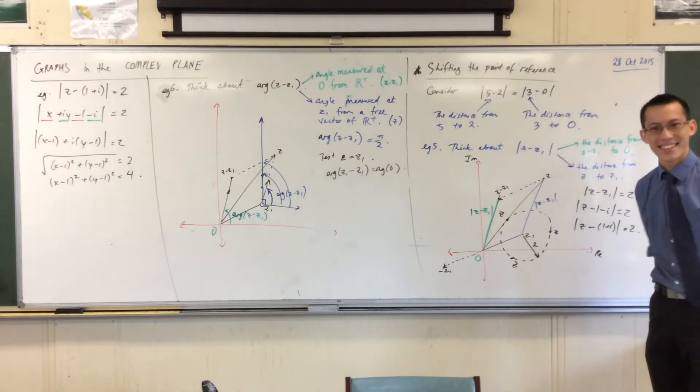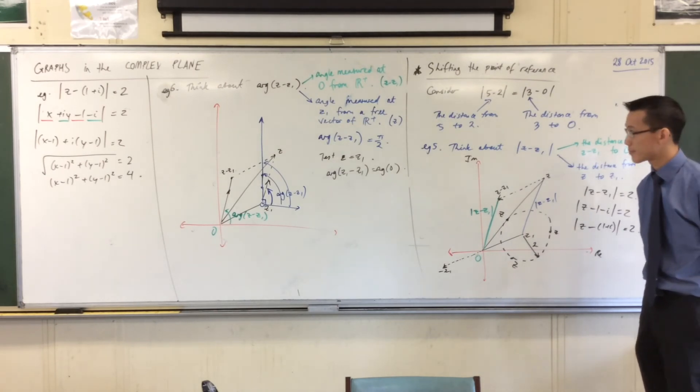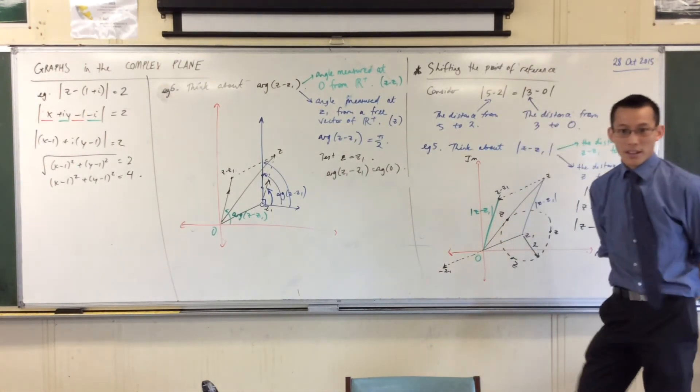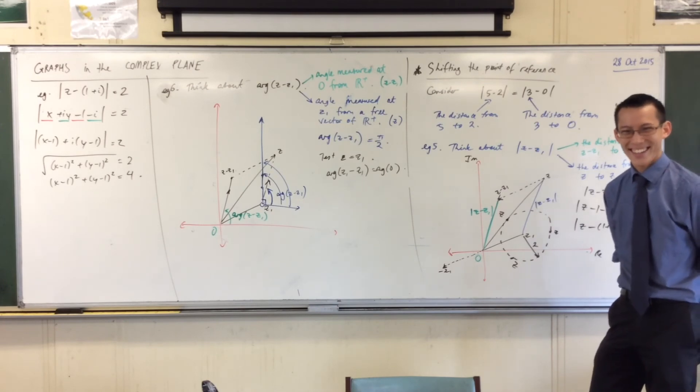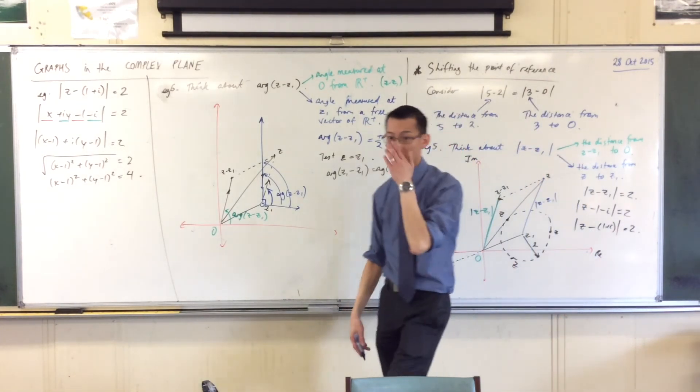Student: If you were to think about it in the other way, where you had z minus z1, how would you draw the locus of points? Great difficulty. Because if you only considered z1, then it would obviously be slightly different. Okay, I'll tell you how you need to do it.